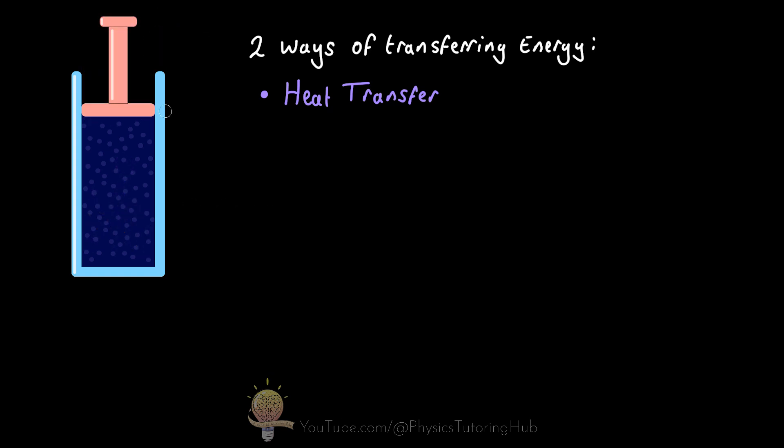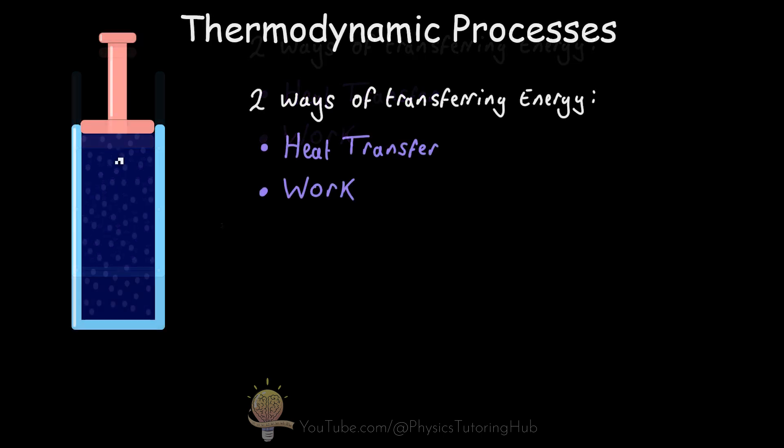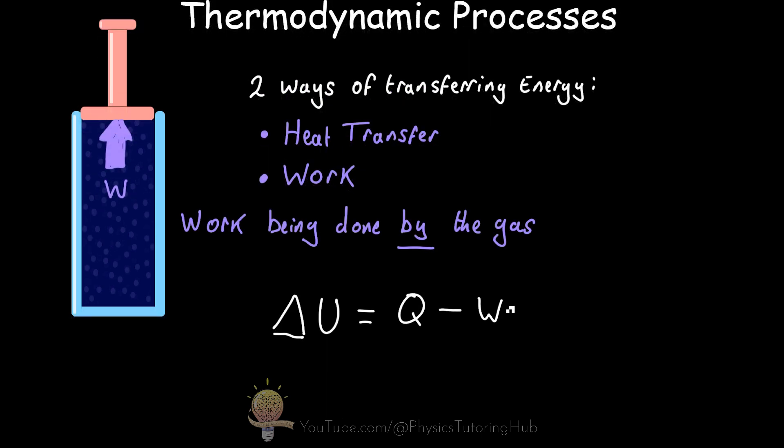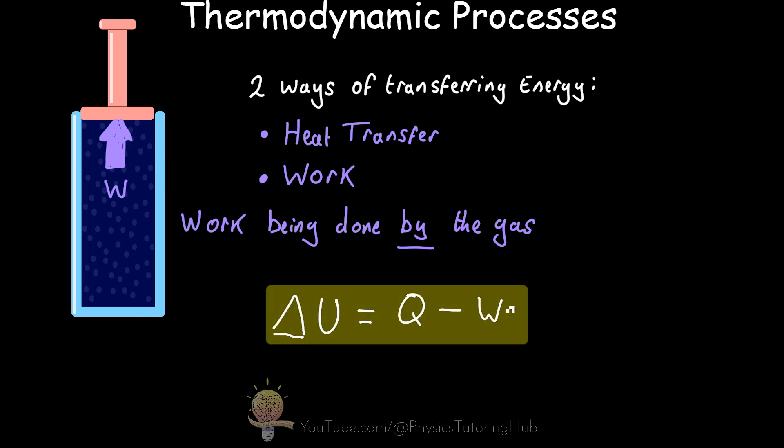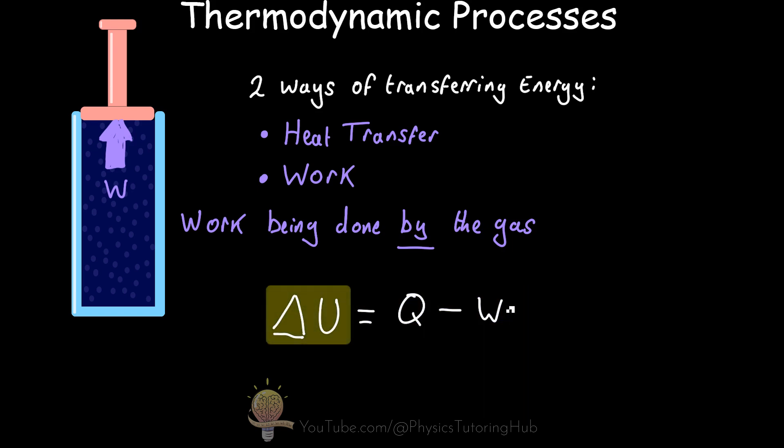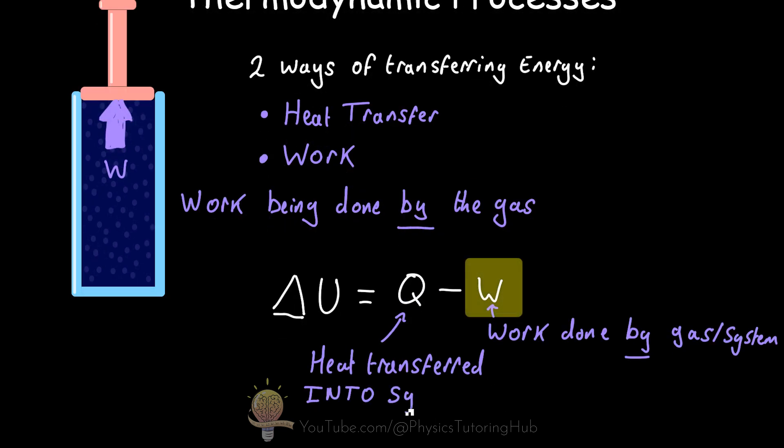So heat transfer is the first way we can transfer energy into or out of a system. The second way is transferring energy through work by either compressing the gas here or allowing this gas to expand. And we can summarize this with the first law of thermodynamics, where the change in internal energy of the system is equal to the heat transferred to the system minus the work done by the system. And we covered this in the last lesson.